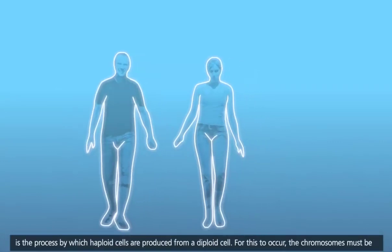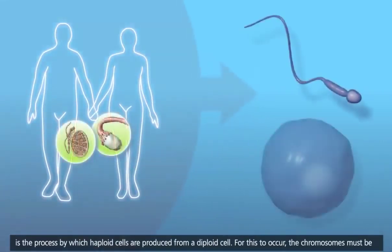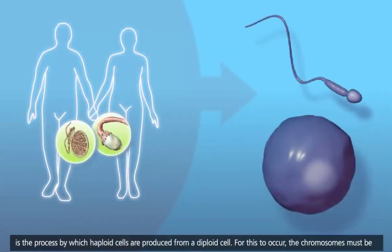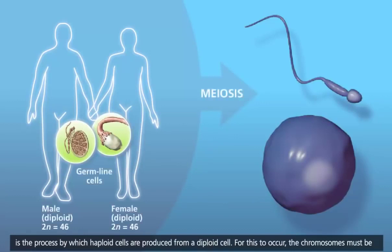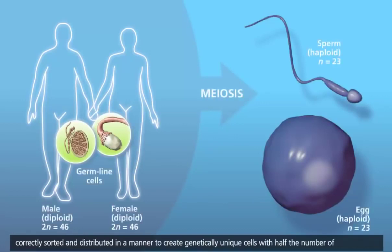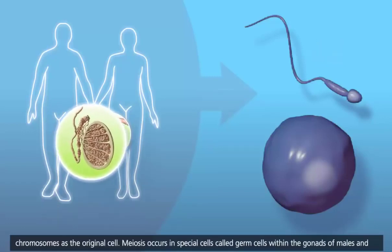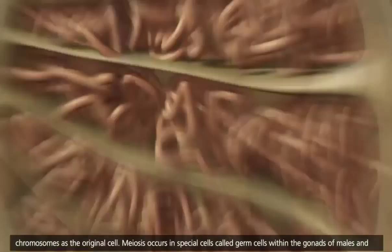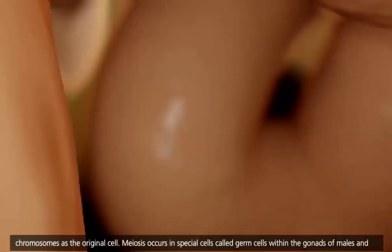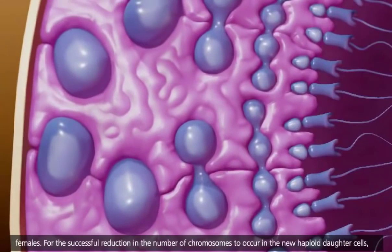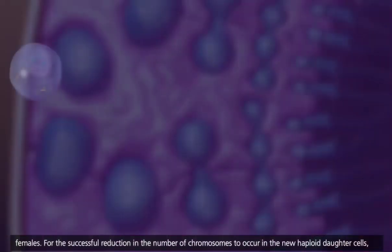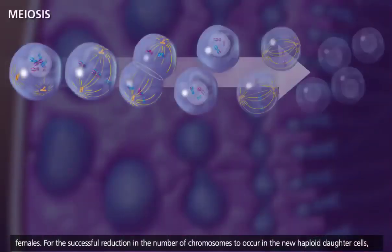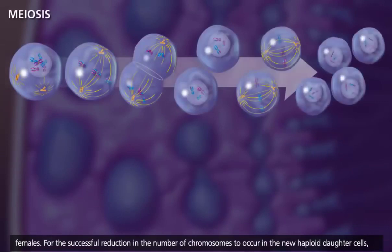Meiosis is the process by which haploid cells are produced from a diploid cell. For this to occur, the chromosomes must be correctly sorted and distributed in a manner to create genetically unique cells with half the number of chromosomes as the original cell. Meiosis occurs in special cells called germ cells within the gonads of males and females. For the successful reduction in the number of chromosomes to occur in the new haploid daughter cells, two rounds of divisions are necessary.